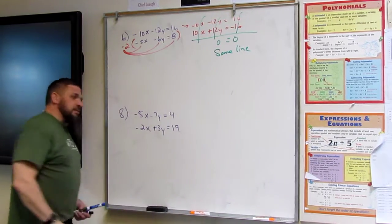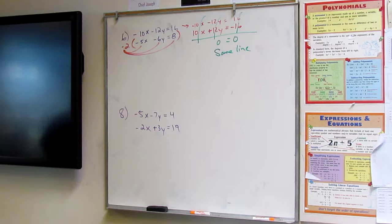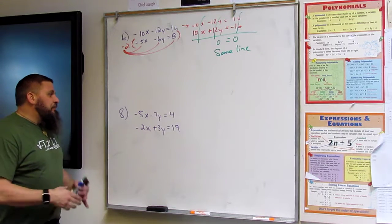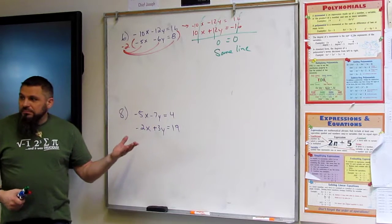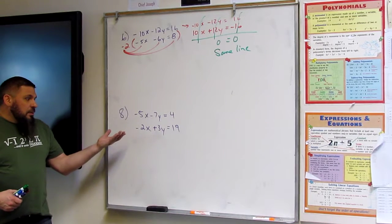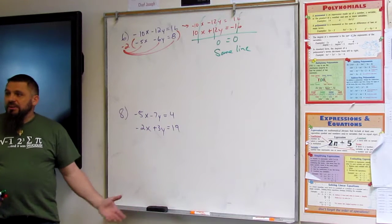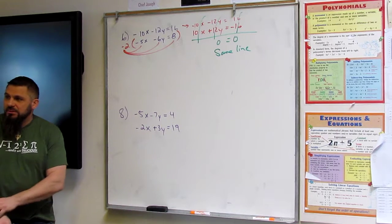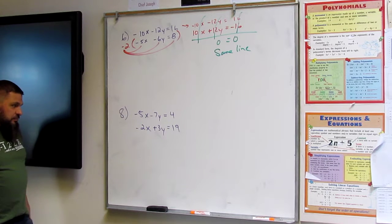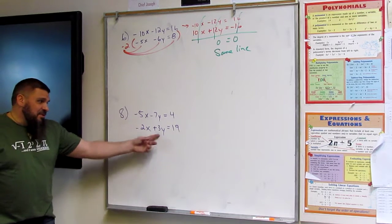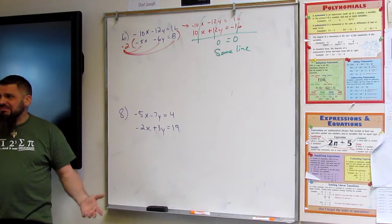All right. So for number eight, we do the same thing. Are these the same? No. Are they opposites? No. Okay. Well, can I make a two into a five? No. Can I make a three into a seven? No.